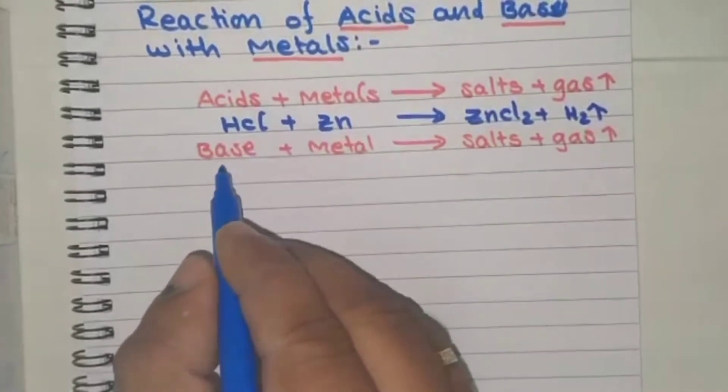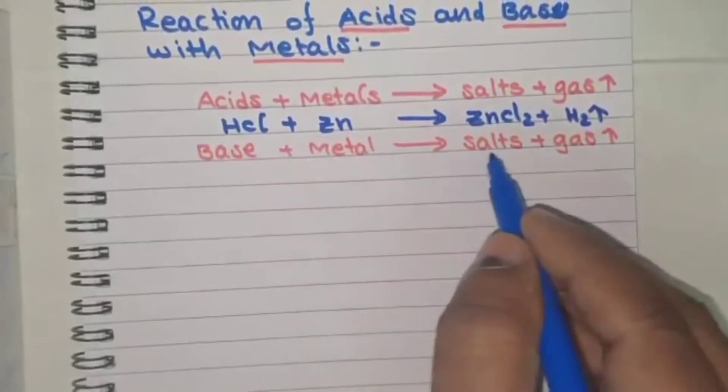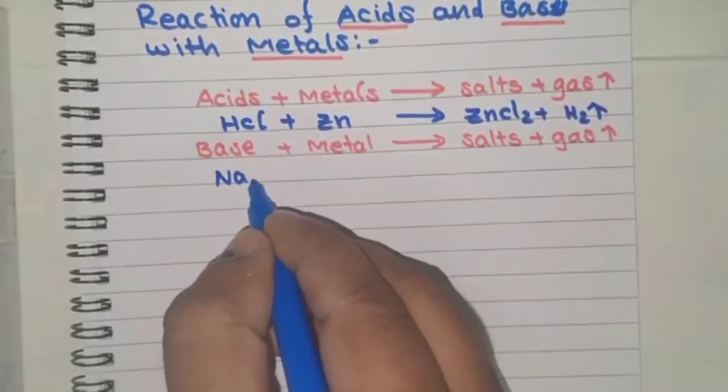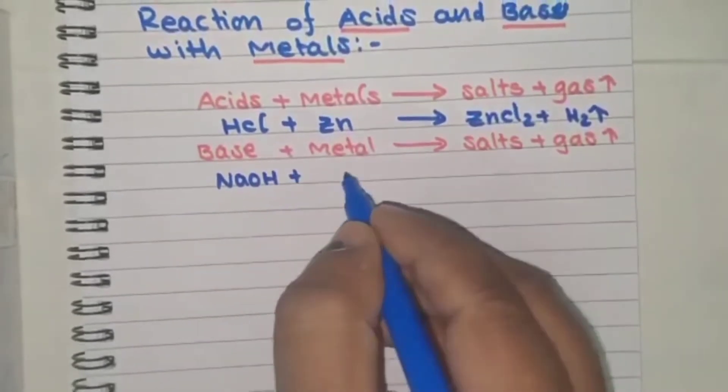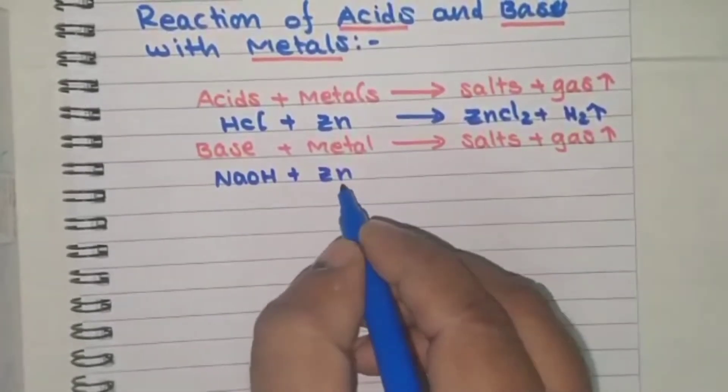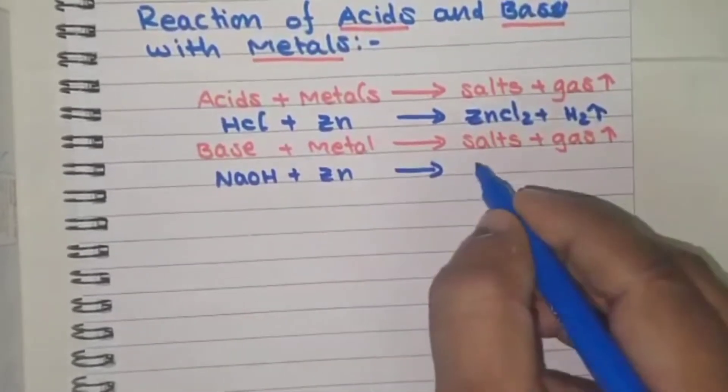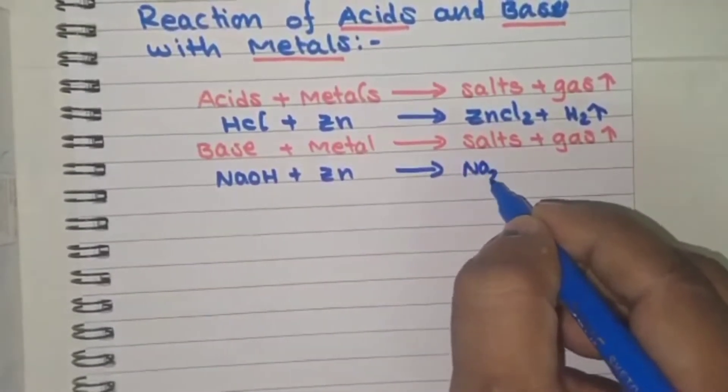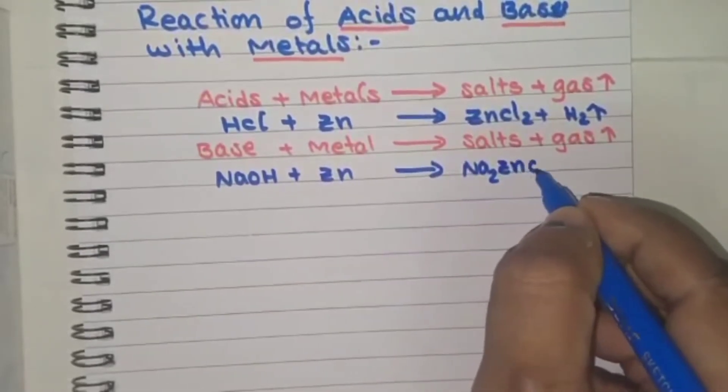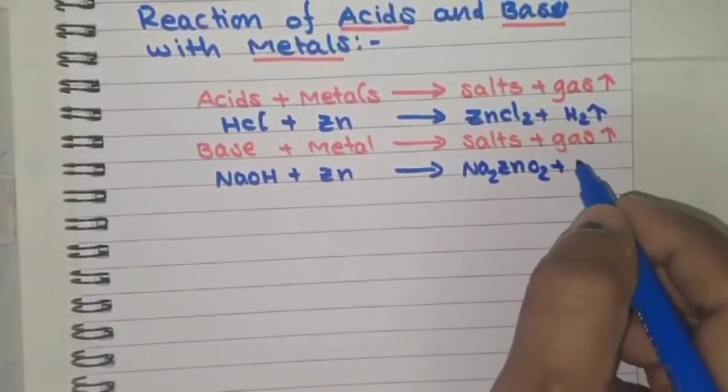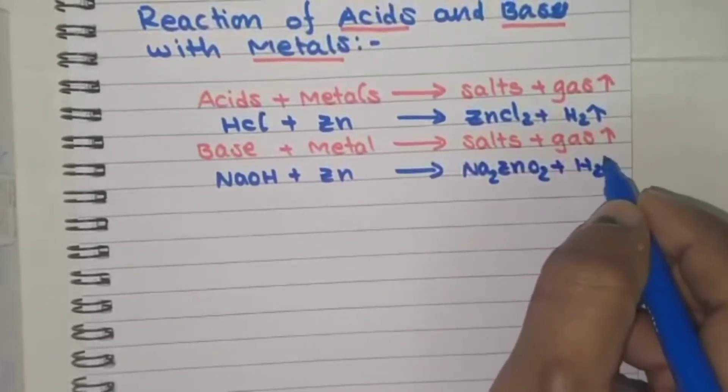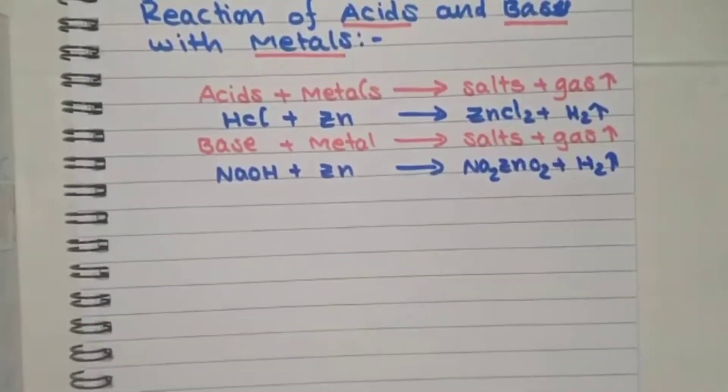At the same time, the base reacts with metal to form salt and water. For example, strong base NaOH, add some few pieces of zinc pieces. In this reaction, here also forms Na2ZnO2, the salt, and some gas, that is hydrogen gas is involved. Let's see the activity.